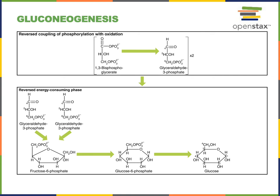Then two glyceraldehyde-3-phosphate molecules can be joined together into a fructose-6-phosphate that is then isomerized to glucose-6-phosphate. And the glucose-6-phosphate can be the reagent for the hexokinase enzyme to run its reaction in reverse, phosphorylating ADP to produce an ATP and a glucose as the product.